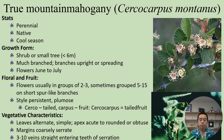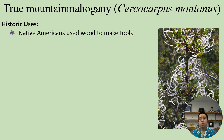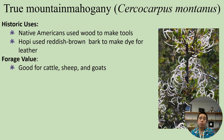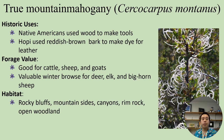Historically, Cercocarpus montanus was used by indigenous tribes and Native Americans for wood to make tools, and its reddish bark was used by certain tribes to dye leather. In terms of forage, it's often considered good for cattle, sheep, and goat, and is valuable winter browse for deer, elk, and bighorn sheep. Habitat-wise, it often occurs on rocky bluffs, mountainsides, canyons, and rimrocks, and sometimes in open woodlands, and is often very abundant in dry soils.